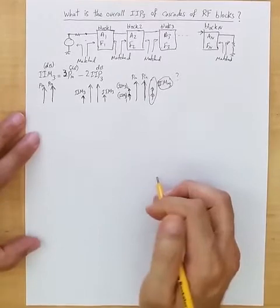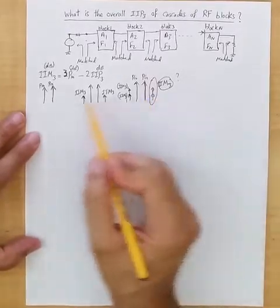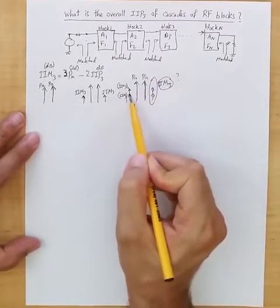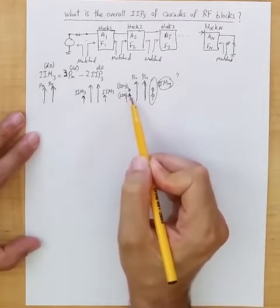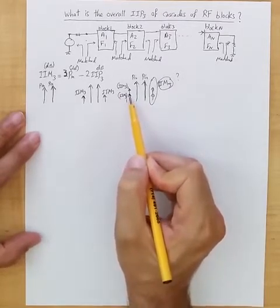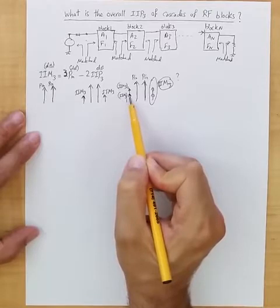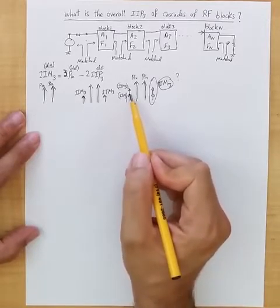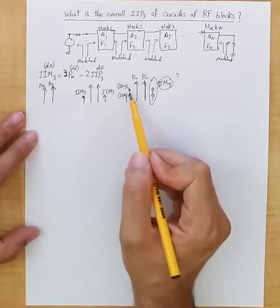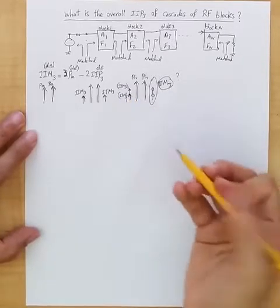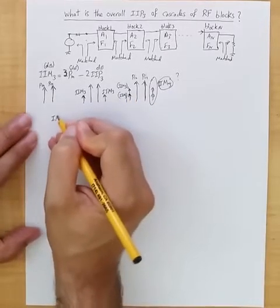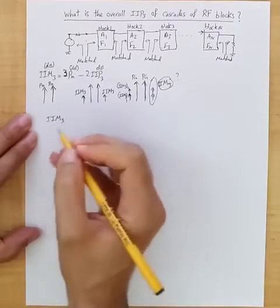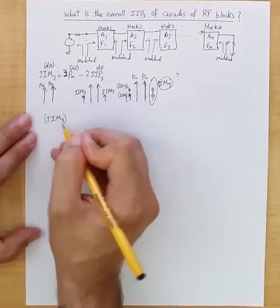As a worst case scenario, since these tones generate these third order harmonic input referred as a single tone, as a worst case scenario we are making the assumption that for worst case computation, all these sinusoids are added voltage-wise in phase. As a worst case, so we can say the overall input referred IIM3 in voltage...